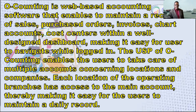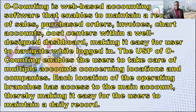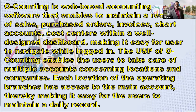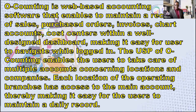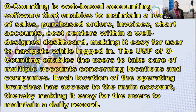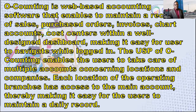The USP — Unique Selling Point, also called Unique Selling Proposition — of OAccounting enables the user to take care of multiple accounts concerning locations and companies. The USP is the essence of what makes your product or service better than others. In online marketing, communicating your USP clearly and quickly is one of the keys to getting potential customers to convert on your site.